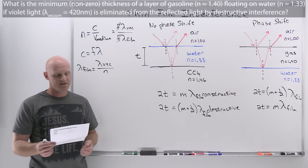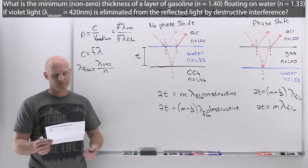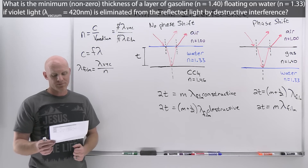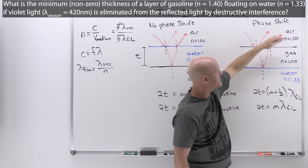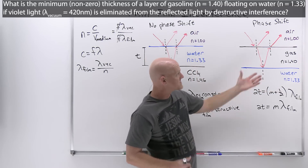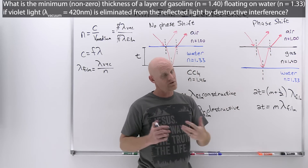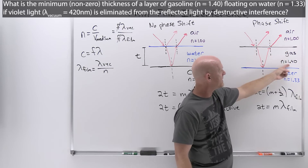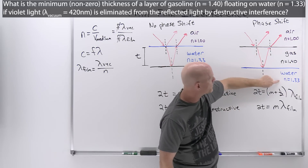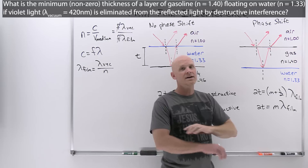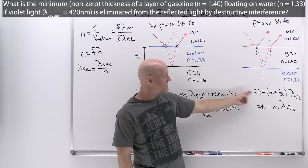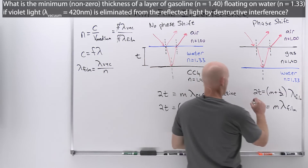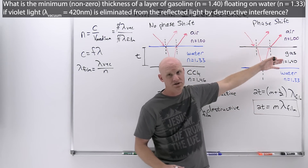The problem asks: what is the minimum non-zero thickness of a layer of gasoline (n = 1.40) floating on water (n = 1.33) if violet light (λ_vacuum = 420 nm) is eliminated from the reflected light by destructive interference? This is the second scenario — air on top of gasoline on top of water. Light goes from air to gas (lower to higher index, first reflected ray inverted), then from gas to water (higher to lower index, second reflected ray not inverted). There's a relative phase shift, so the condition for destructive interference is 2t = mλ_film.